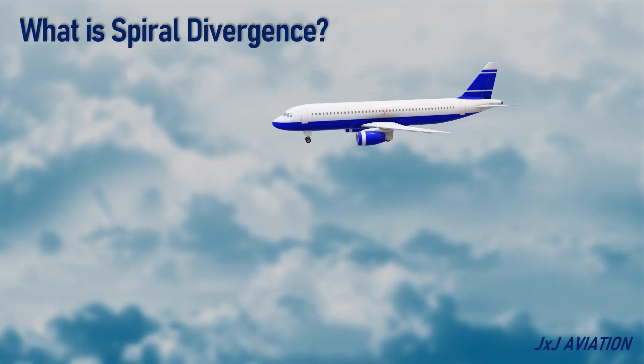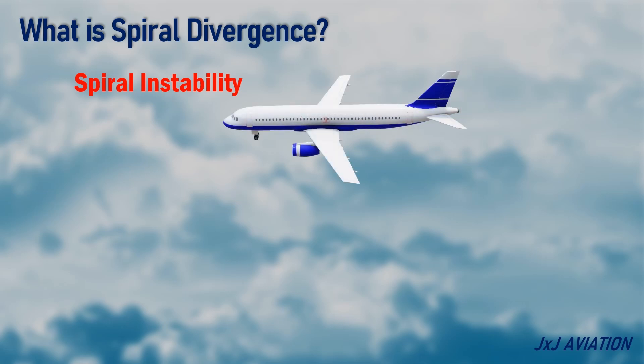First, let's understand what is spiral divergence. Spiral divergence is also known as spiral instability. When an aircraft enters a spiral divergence, it initially experiences a slight roll or bank towards one side. If this is not corrected, the bank angle increases, causing the aircraft to turn more steeply.